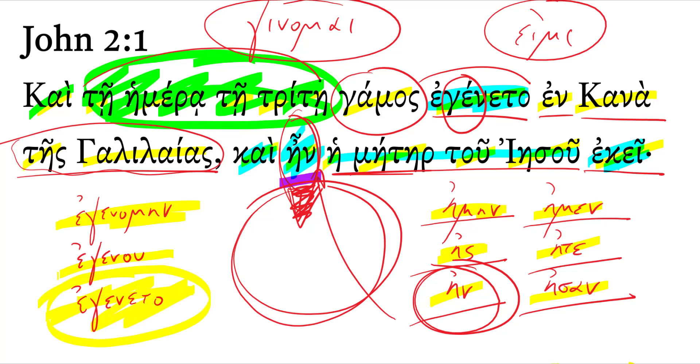There it is, that third person singular. It happened, it came about, it was, it came on the scene. There are a lot of different ways that could be translated.